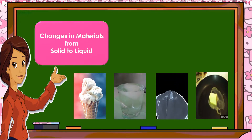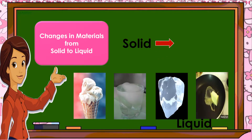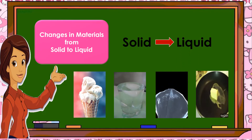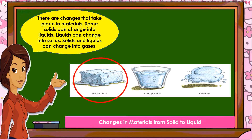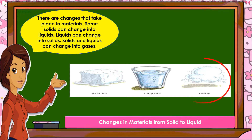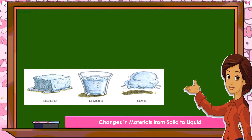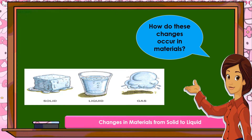Our lesson for today is about changes in materials from solid to liquid. There are changes that take place in materials. Some solids can change into liquids. Liquids can change into solids. Solids and liquids can change into gases. And the question is, how do these changes occur in materials? Let's find out!